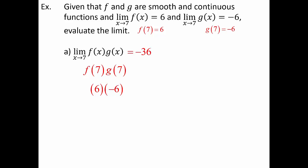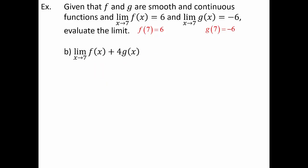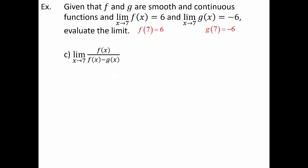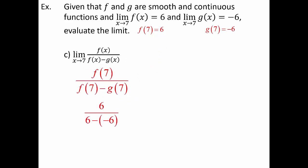For the limit as x approaches 7 of f(x) + 4·g(x): plugging in 7 gives f(7) + 4·g(7) = 6 + 4(-6) = 6 - 24 = -18. For the limit as x approaches 7 of f(x) / (f(x) - g(x)): plugging in gives 6 / (6 - (-6)) = 6 / 12 = 1/2.